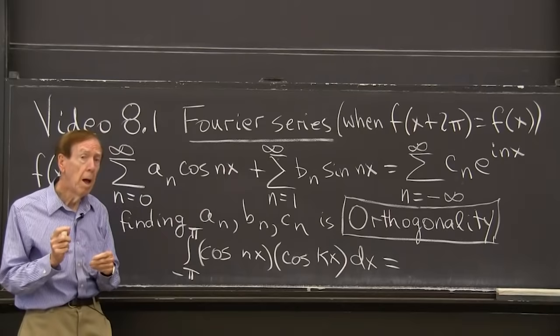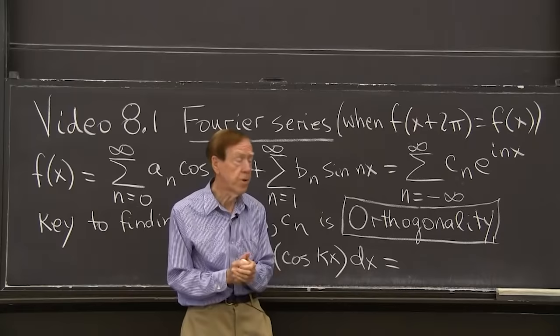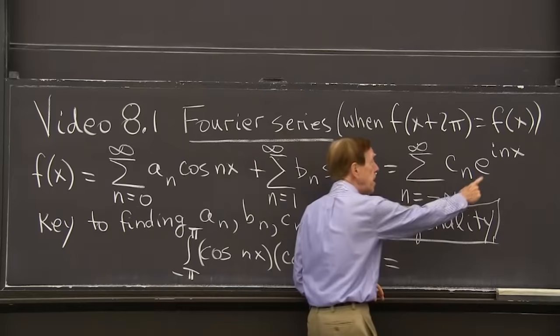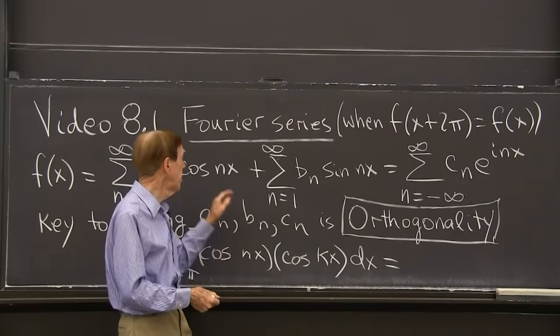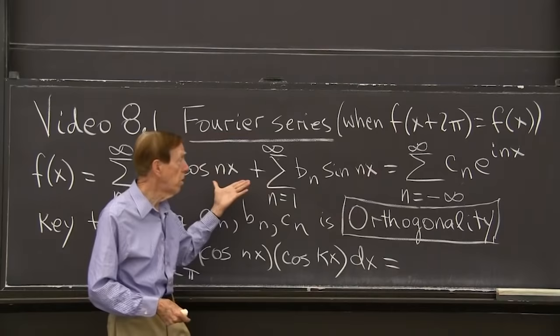Whereas here, I will need a separate formula for a_n and for b_n. So this is natural when the function is real. But in the end, and for the discrete Fourier transform, and for the fast Fourier transform, the complex case will win. And of course, everybody sees that e^(inx), by Euler's great formula, is a combination of cosine nx and sine nx.